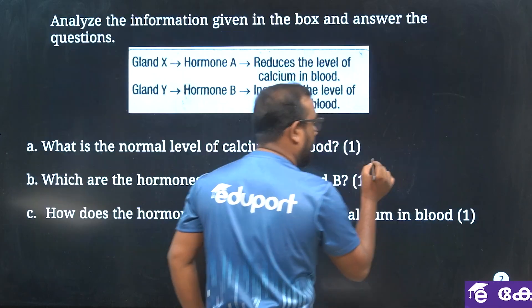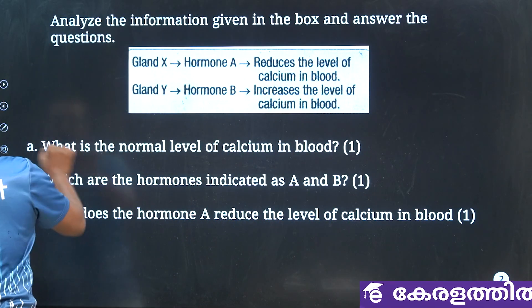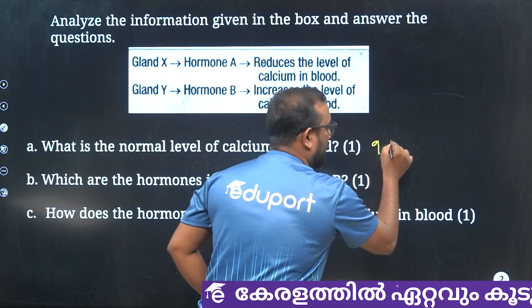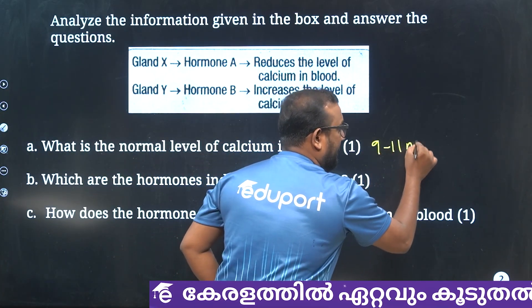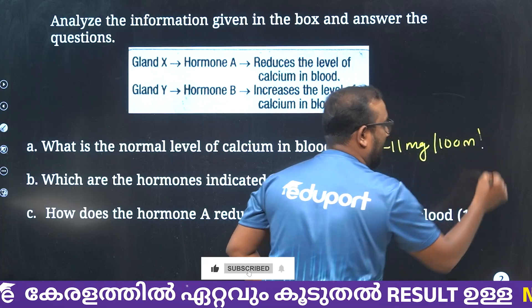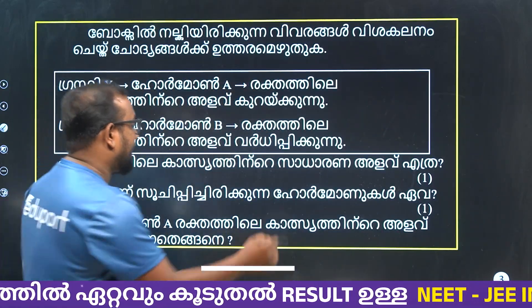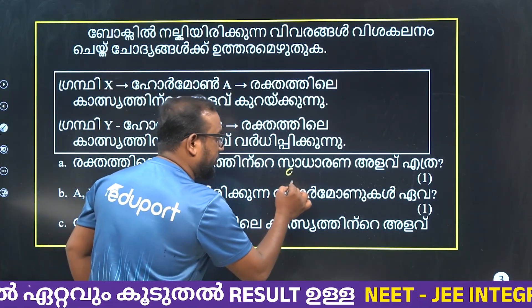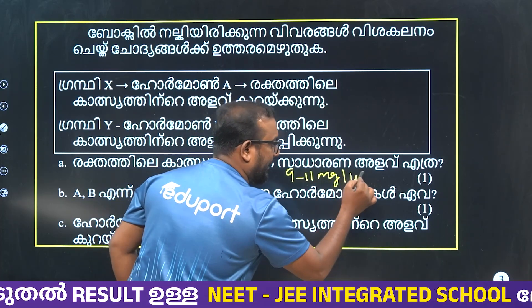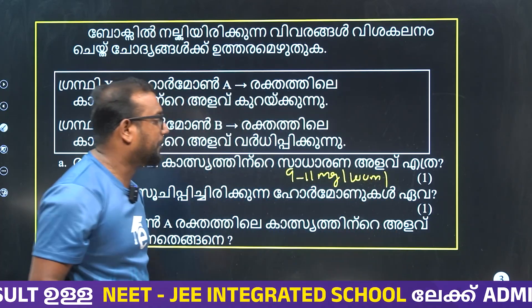9 to 11. Yes — 9 to 11 milligram per 100 ml. That is 9 to 11 milligram per 100 ml blood.